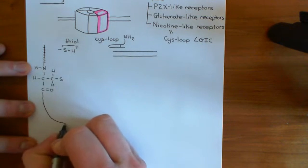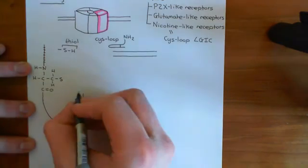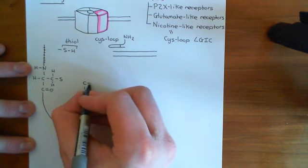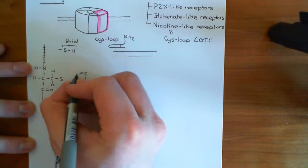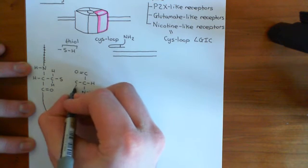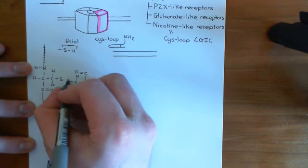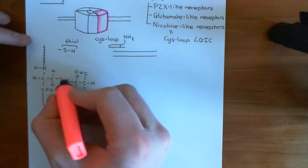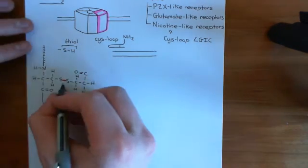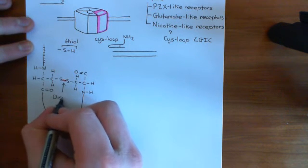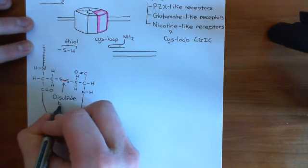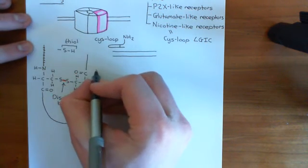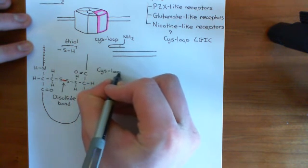The polypeptide will continue round, and then on the parallel strand you'll have another cysteine residue — with the amino group, alpha carbon, carboxylic acid group, and R group consisting of a methylene group with a thiol group. Again, I've taken the hydrogen off this thiol group. Connecting those two sulfurs together gives us a disulfide bond, or disulfide bridge. This is what holds the polypeptide in this loop structure known as the cys-loop.